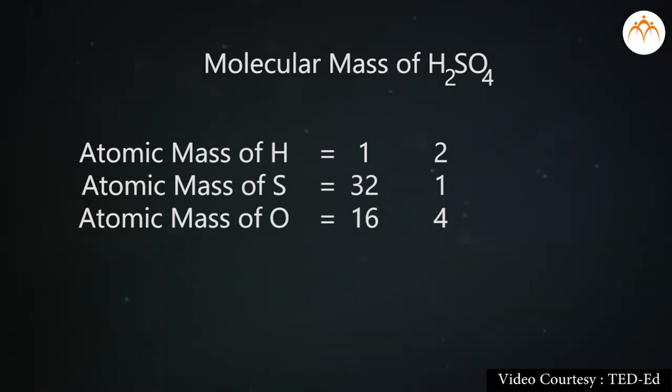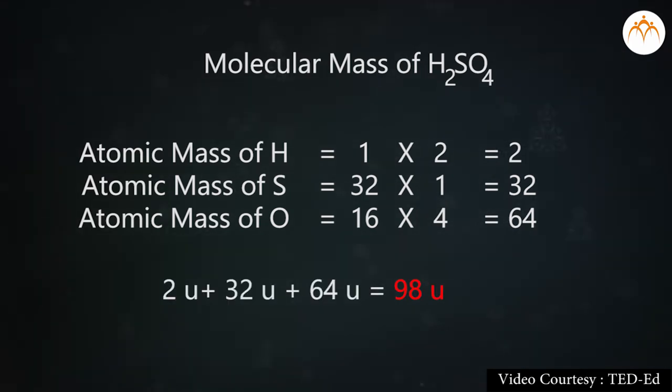Therefore, molecular mass of H2SO4 equals atomic mass of hydrogen into number of atoms of hydrogen plus atomic mass of sulfur into number of sulfur atoms plus atomic mass of oxygen into number of atoms of oxygen equals 1 into 2 plus 32 into 1 plus 16 into 4. That equals 2 plus 32 plus 64, that equals 98 Dalton.